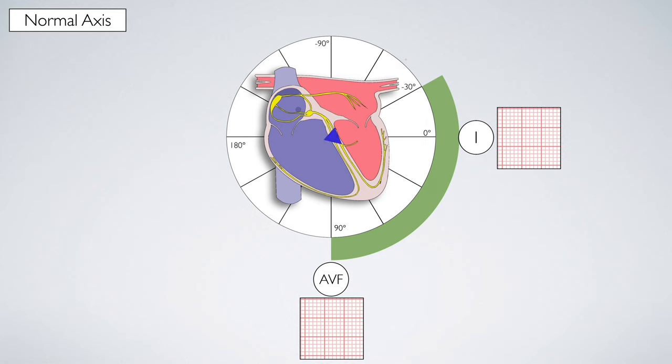As the electrical activity moves towards the apex of the heart, it also moves towards lead one, making the QRS complex positive. The electrical activity also moves towards AVF, making the QRS complex here also positive. So both leads have positive QRS complexes.